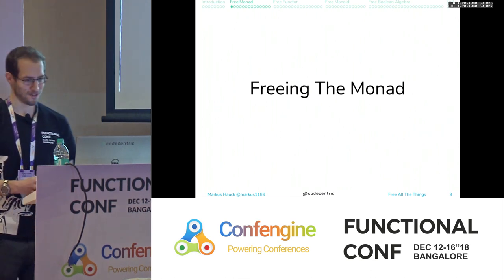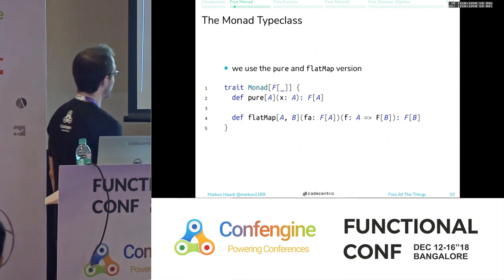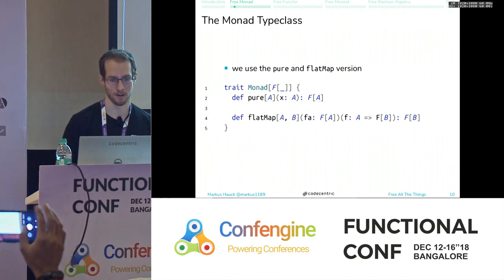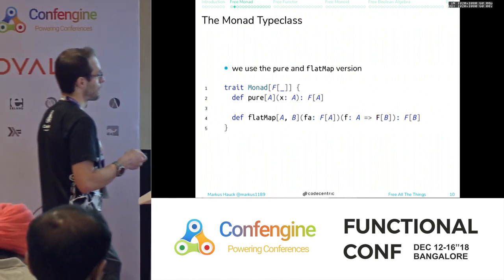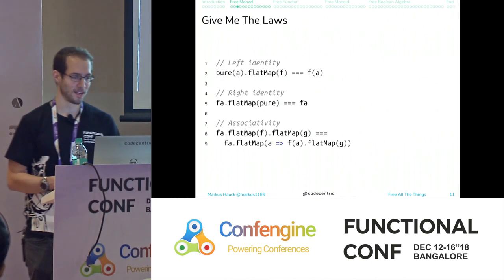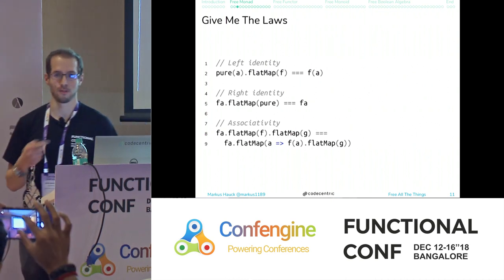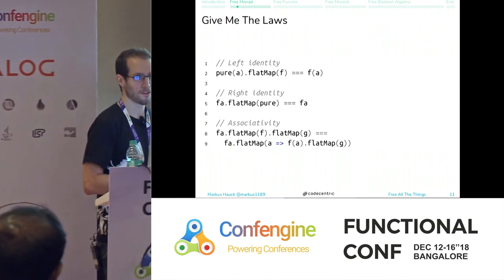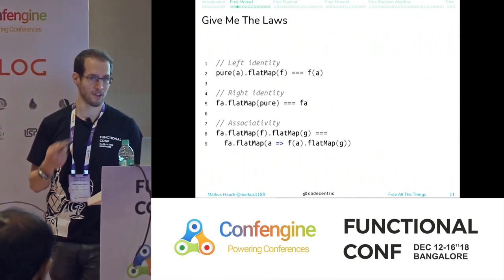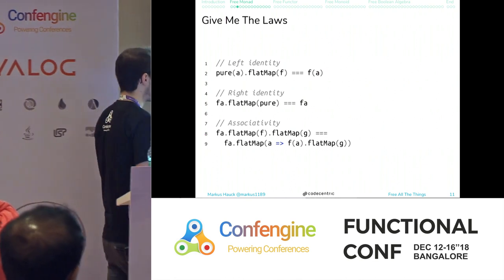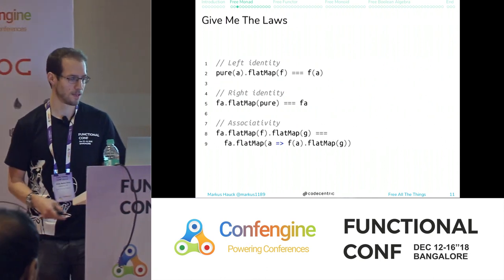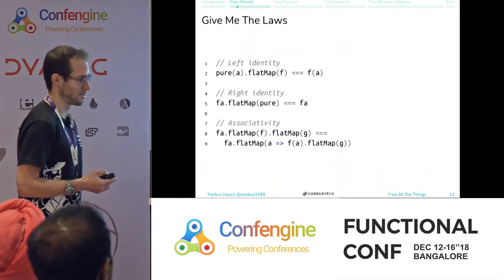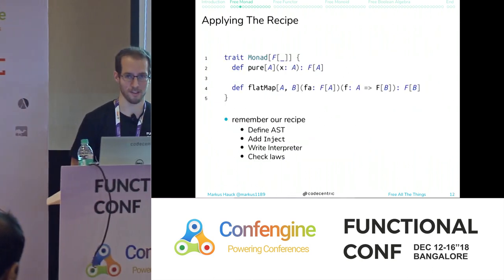Let's free the monad first. The monad type class has pure instead of return and flatMap, which takes an FA wrapped in a higher-kinded type constructor and a function from A to F of B. There are three laws: left identity says that lifting something with pure and then flatMapping should equal just applying F. Right identity says flatMapping over FA with pure should have no effect. And there's the associativity law, which looks strange with flatMaps but is just associativity.